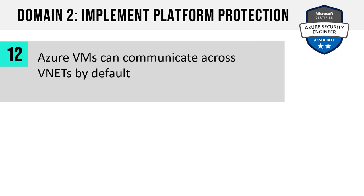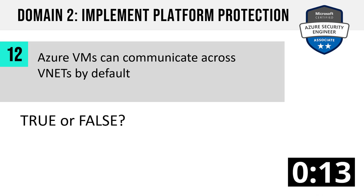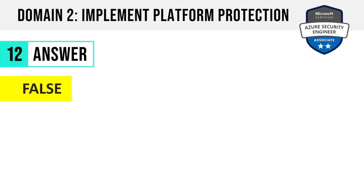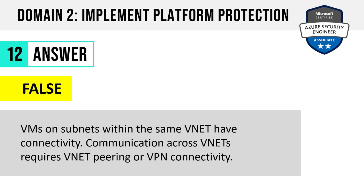Number 12. Azure VMs can communicate across VNets by default. True or false? The answer is false. VMs within the same virtual network do have connectivity by default, even if they're on different subnets, as long as they're within the same VNet. Communication between virtual machines in separate VNets requires either VNet peering or VPN connectivity between those virtual networks.